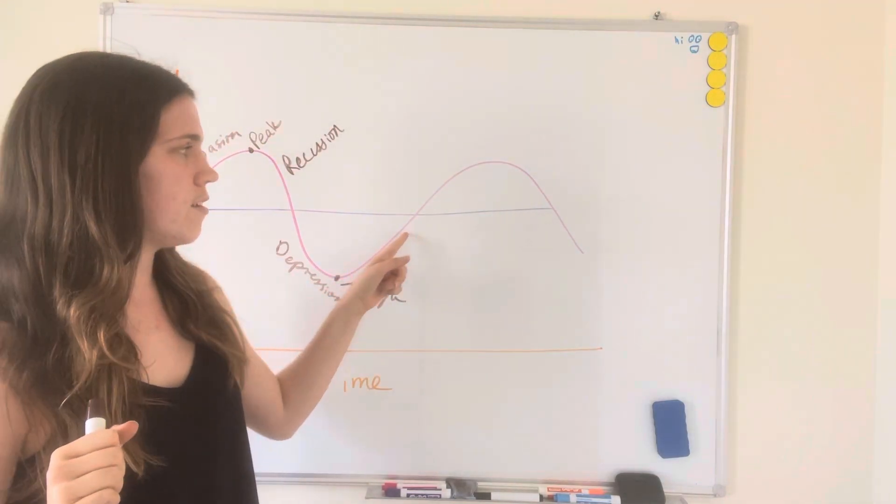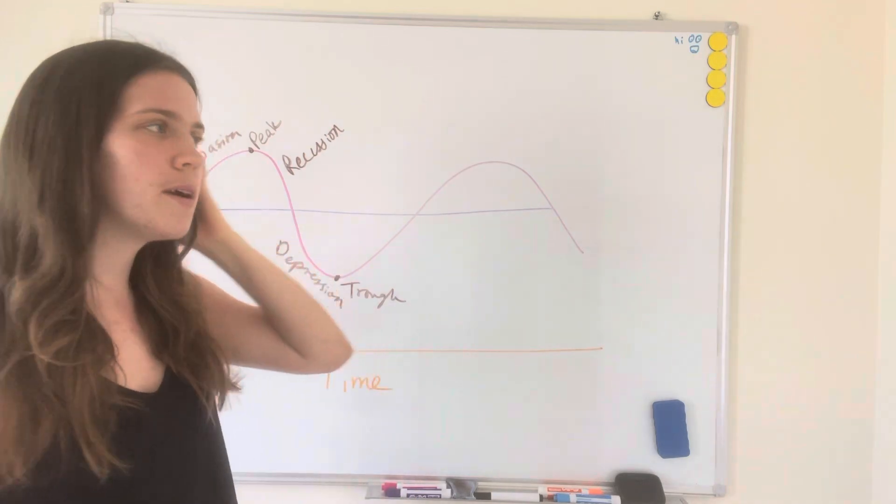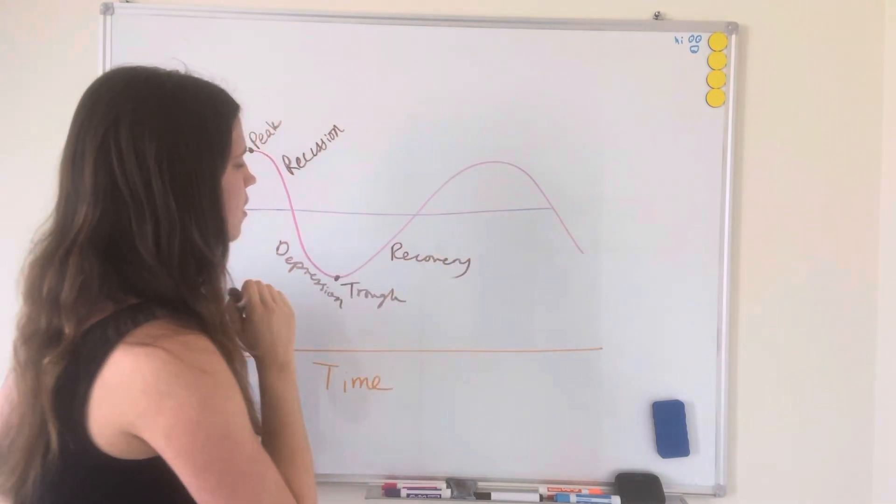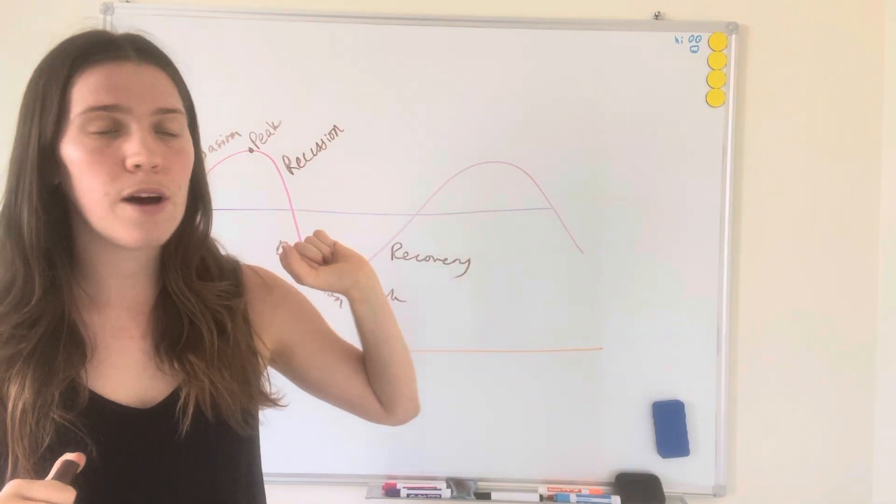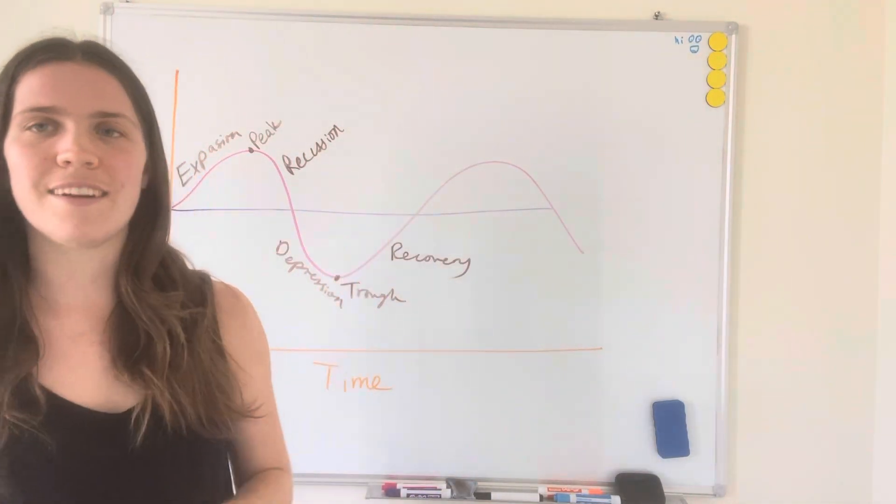And good news, it is going back up. This is called a recovery, which is pretty easy to remember. Recovery. This is when the GDP continues to go up, and then you have our cycle on where again once it gets above here it will be an expansion.